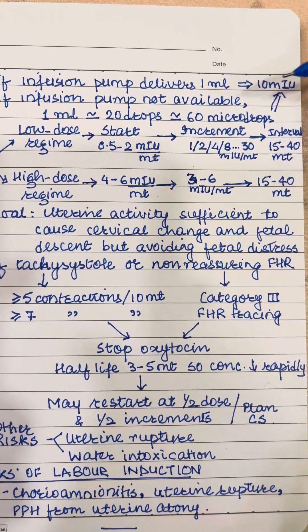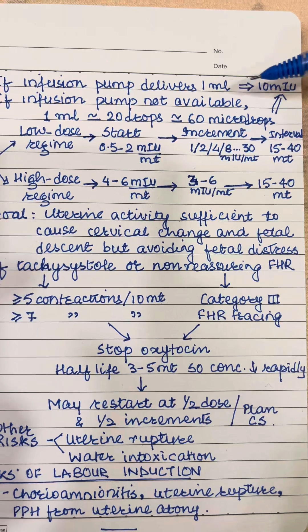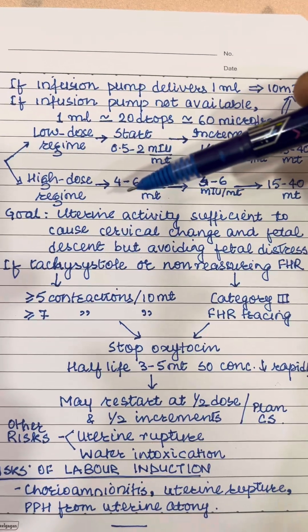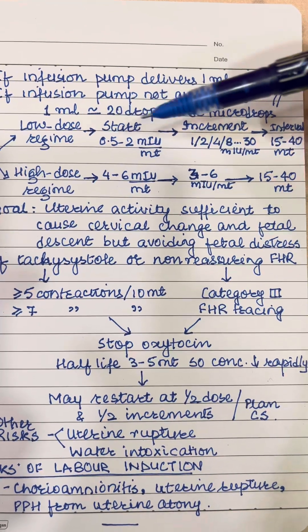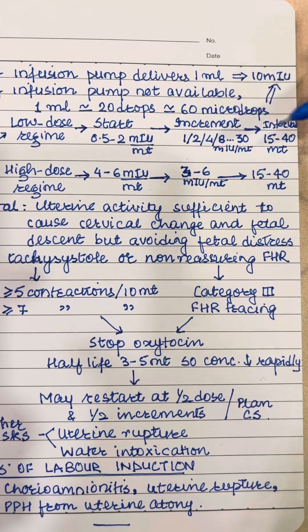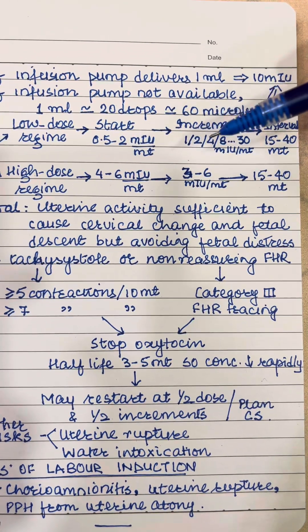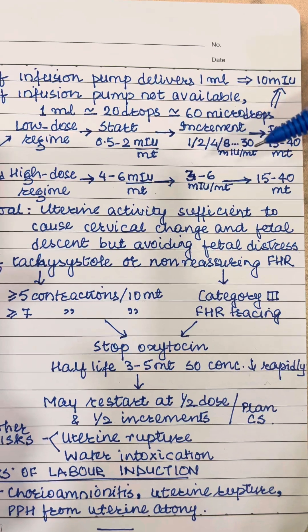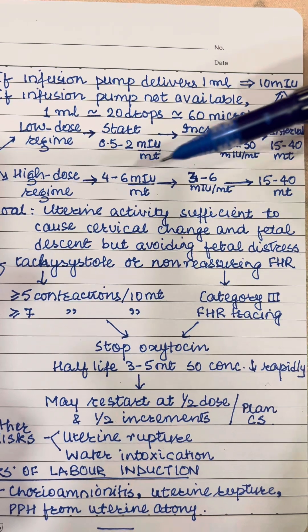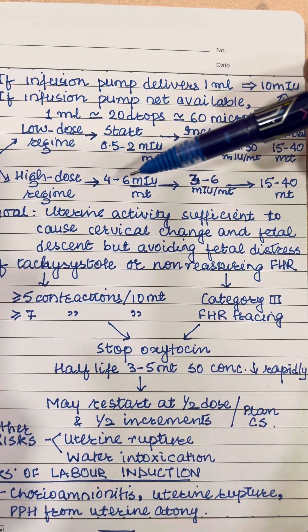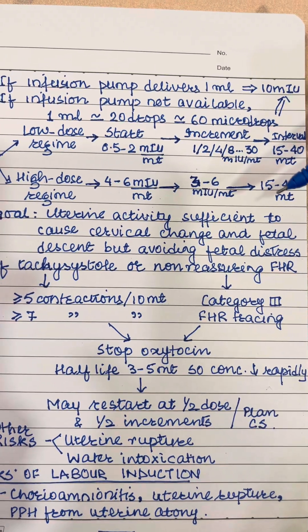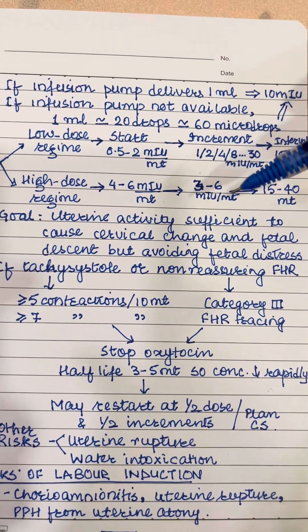The rate is decided on the basis of a low-dose or high-dose regime. For a low-dose regime, start with 0.5 to 2 milli-international units per minute, reassess every 15 to 40 minutes, and give increments of 1 to 4, up to 30 milli-international units per minute. For a high-dose regime, begin at 4 to 6 milli-international units per minute, reassess every 15 to 40 minutes, then give increments of 3 to 6 milli-international units per minute.